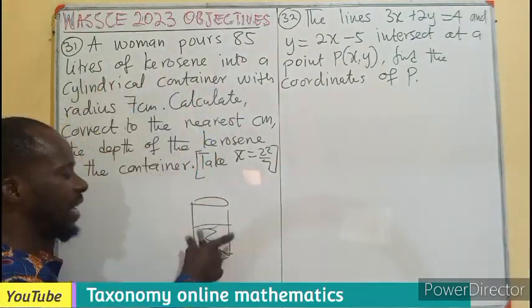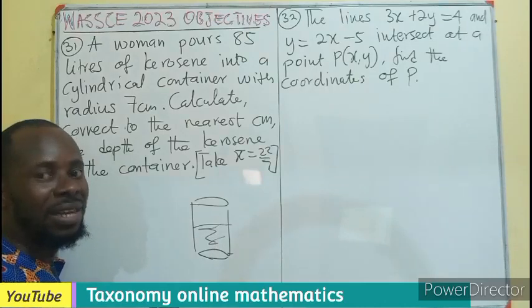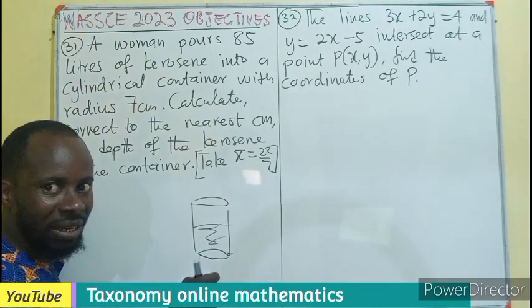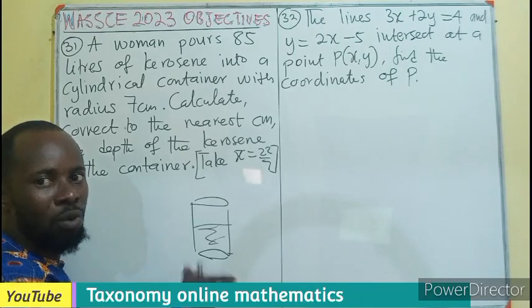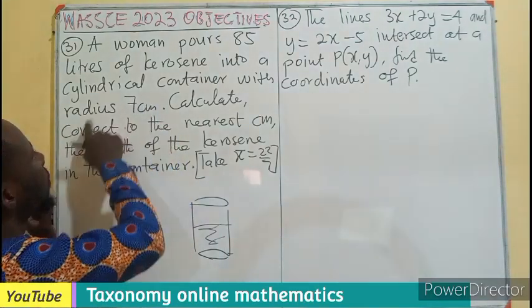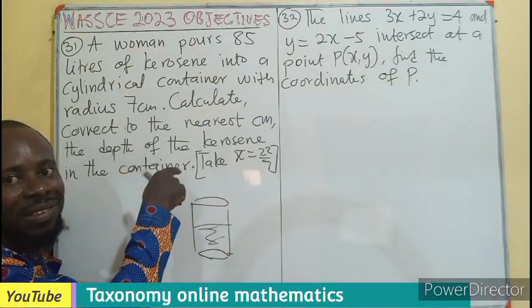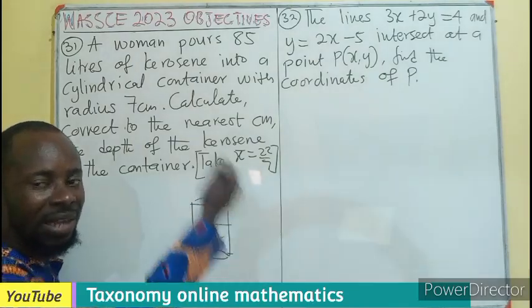Then 85 liters is the volume of the kerosene, meaning the volume is mentioned. Therefore, the volume of a cylinder will make use of the radius and height. So we can be able to find the height since the radius is known.